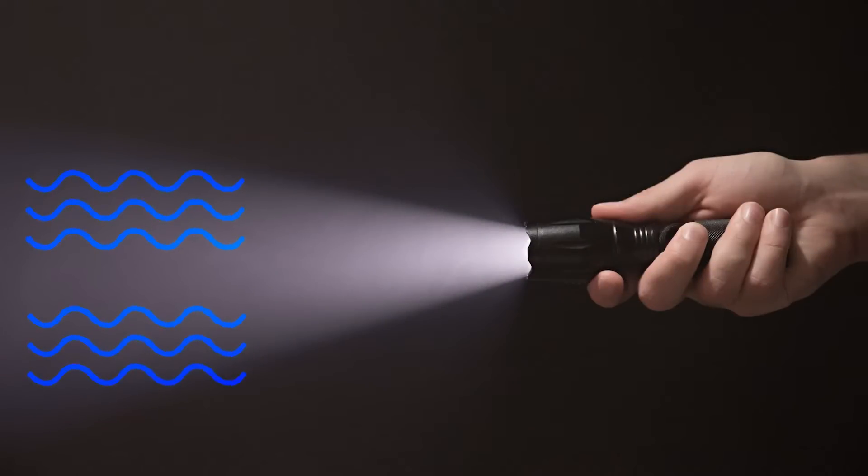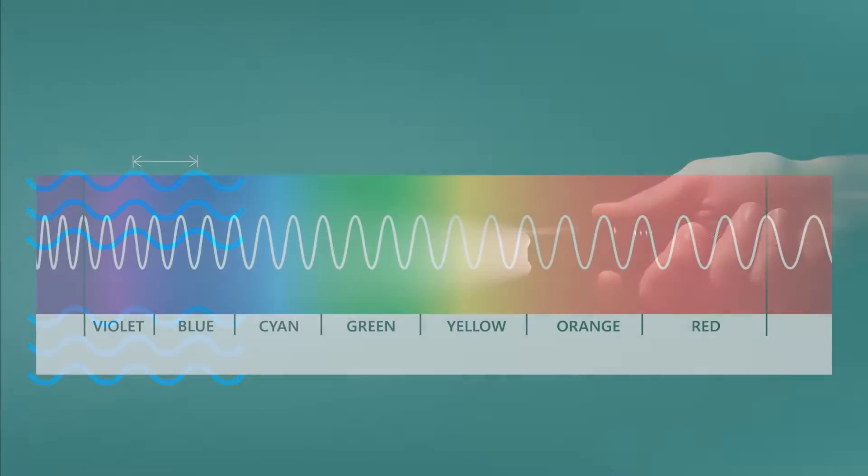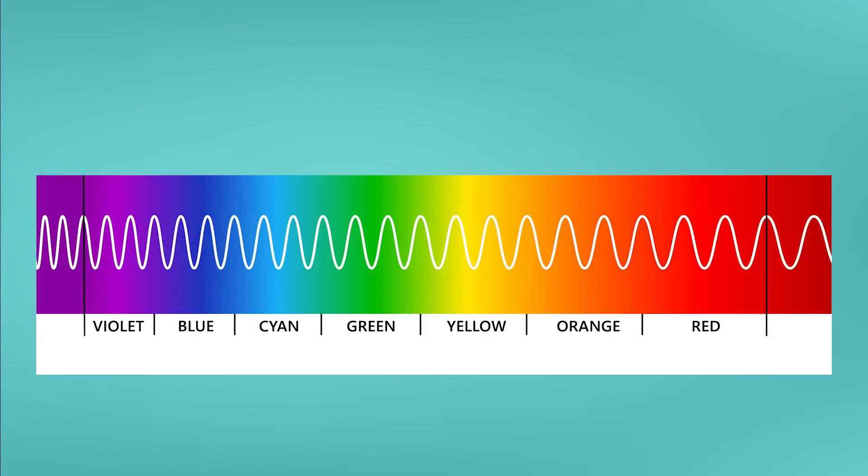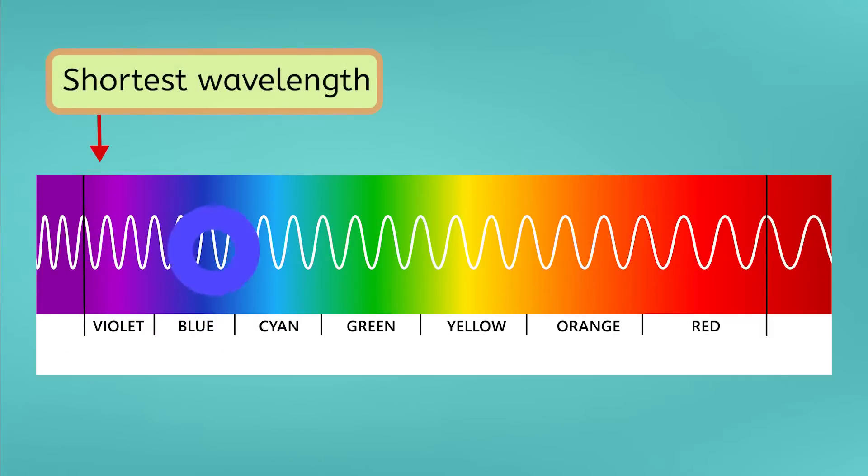Light travels in waves. These waves can have different distances between waves or wavelengths. How that light looks to us, or whether we can see it at all, depends on its wavelength. For example, light that we see as red has a long wavelength, orange is a little shorter, yellow is shorter than that, and so on through the color spectrum, with blue and violet having the shortest wavelengths.